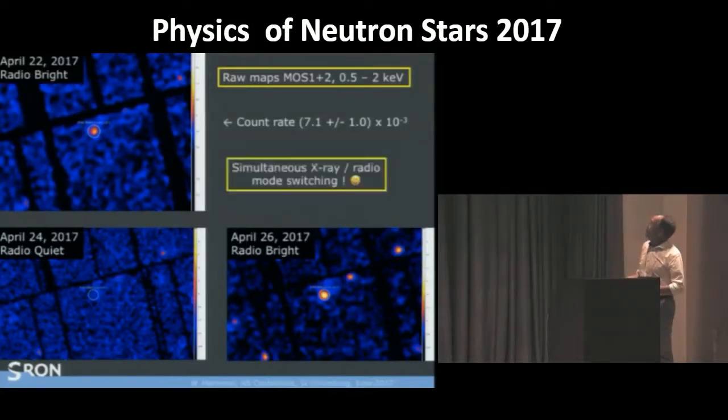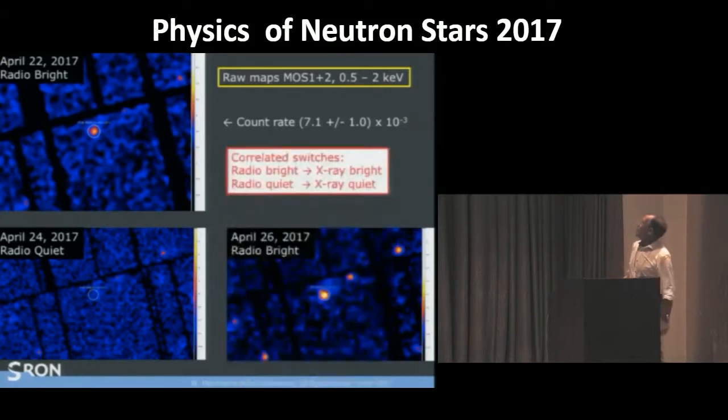In fact, it was bingo. We do see again simultaneous X-ray radio mode switching. So this is the second case that we discovered this. This was wonderful. But in this case, there are correlated switches. Radio bright with X-ray bright. Radio quiet with X-ray quiet. So the opposite to what we see for 0943.